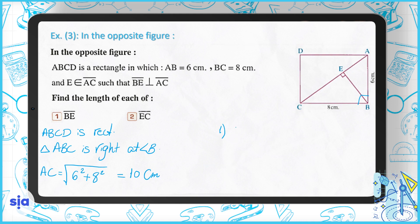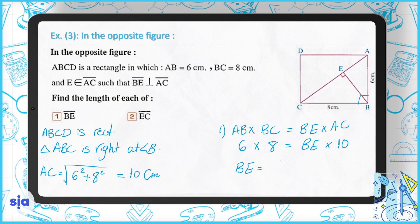To find BE, we use AB × BC = BE × AC. So 6 × 8 = BE × 10, which gives BE = 48 ÷ 10 = 4.8 centimeters.